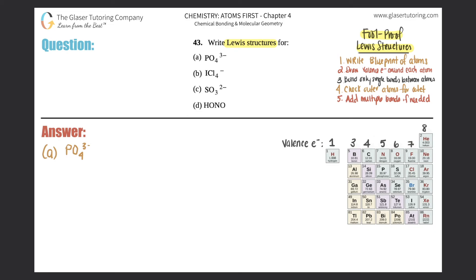First things first, we always have to write a blueprint for the atoms. The central atom is always the least electronegative element, and it's never hydrogen — hydrogen is never the central atom. It goes by electronegativity.